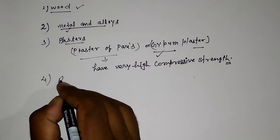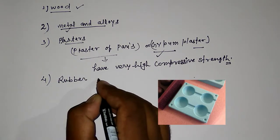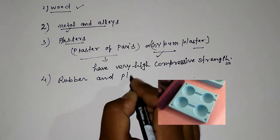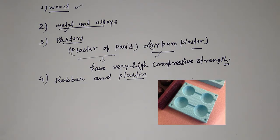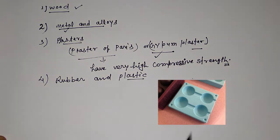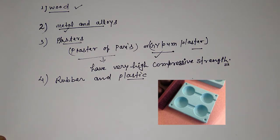Next one is rubber and plastic. Rubber and plastic are also used for making pattern material. We can say thermoplastic and thermosetting — these are the rubber and plastic materials used for making patterns. The advantage of these is that we can easily remove and join them to make complex shapes.